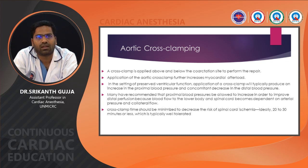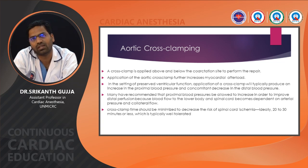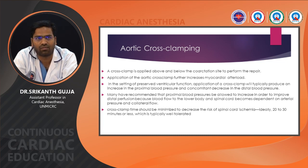During aortic cross clamping, the clamp is applied above and below the coarctation site. Application of the aortic clamp further increases myocardial afterload. In the setting of preserved LV function, cross clamping typically produces an increase in proximal blood pressure and a concomitant decrease in distal blood pressure. It is recommended that proximal blood pressure be allowed to increase in order to improve distal perfusion, as blood flow to the lower body and spinal cord is dependent on arterial pressure and collateral flow. Cross clamp time should be minimized, ideally less than 30 minutes.